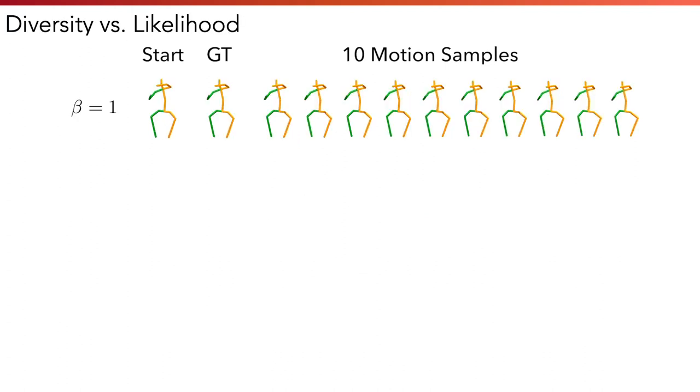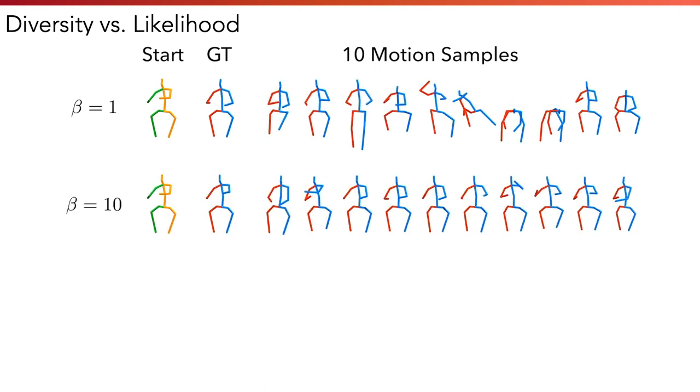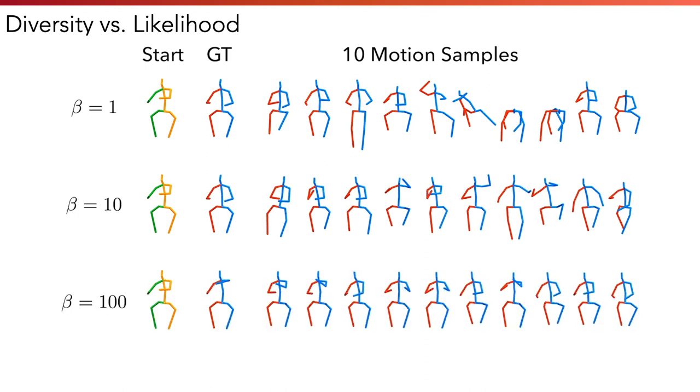Here we show the trade-off between diversity and likelihood by adjusting the weighting factor beta before the KL term. We can see that a large beta produces more likely but less diverse motion samples, while a small beta generates diverse and less likely yet still plausible motion samples.